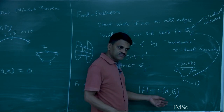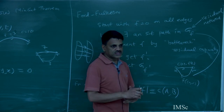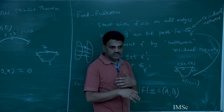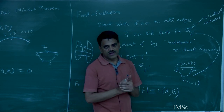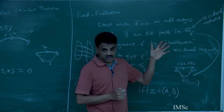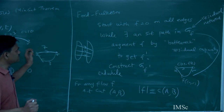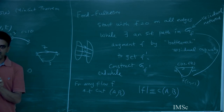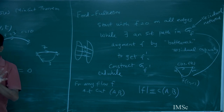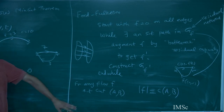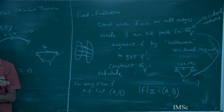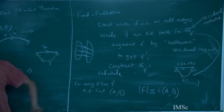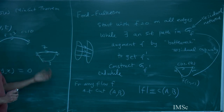When you reach a stage where your residual network has no ST path, you can exhibit a cut where these two quantities are same. Then you know that you actually got the max flow, because for any other flow, that flow would be strictly more than this cut and you know that is not possible. The cut which realizes the max flow: take s and all vertices reachable from S in the final residual network, and the remaining vertices belong to B. You can show the capacity of that cut is equal to the flow you have.